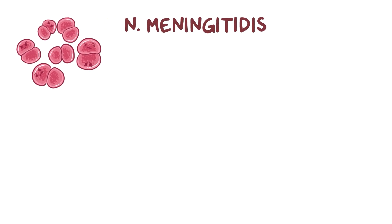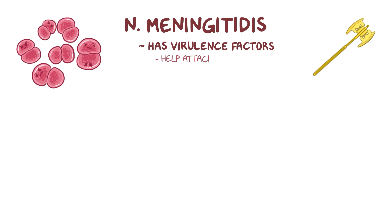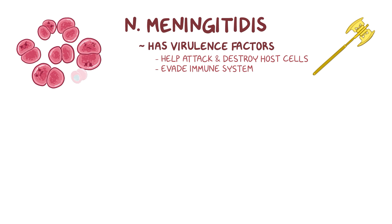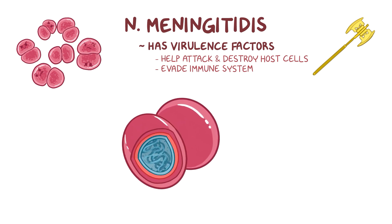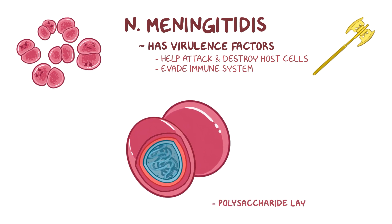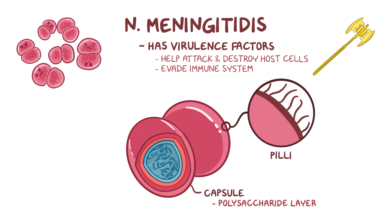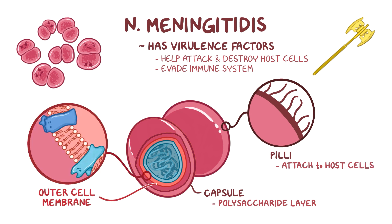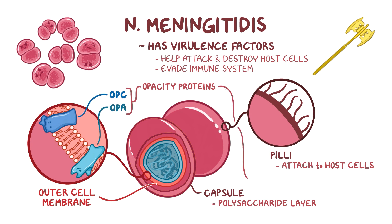N. meningitidis has a number of virulence factors that are like assault weaponry that help it attack and destroy the host cells and evade the immune system. First, N. meningitidis is encapsulated, meaning it's covered by a polysaccharide layer called a capsule. The capsule has pili, which are hair-like extensions that help the bacteria attach to host cells. Underneath the capsule, there's the outer cell membrane, which has two opacity proteins called OPA and OPC, and they also help N. meningitidis attach to host cells.